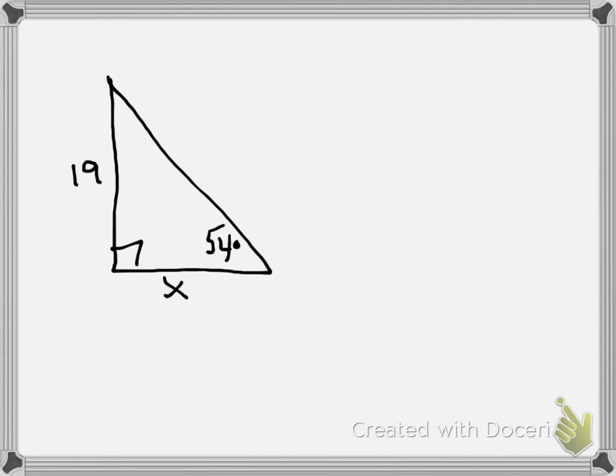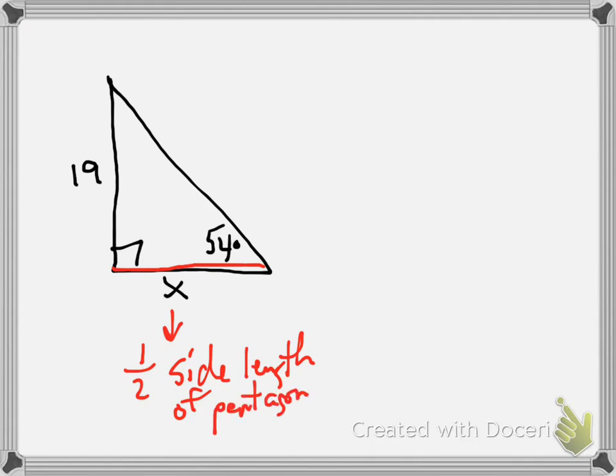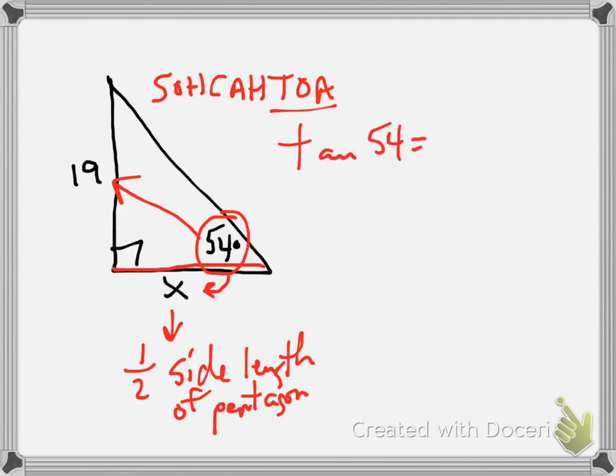We need to find the length of this side because this side is half the side length of the pentagon. We're trying to find perimeter, so that's important. Now we have to use trig, so we're back to SOHCAHTOA.